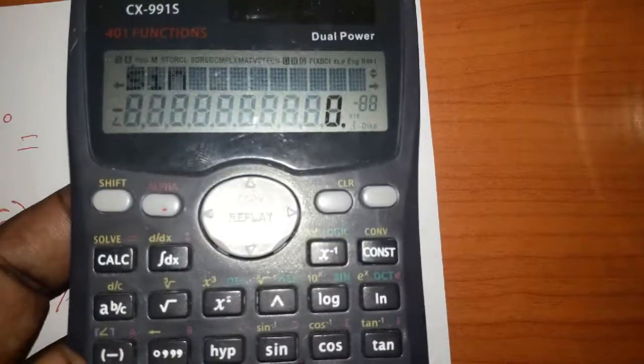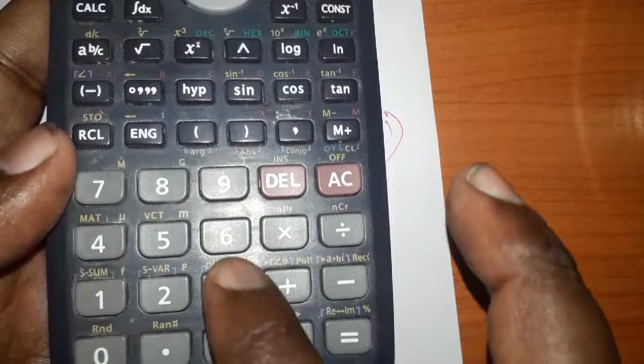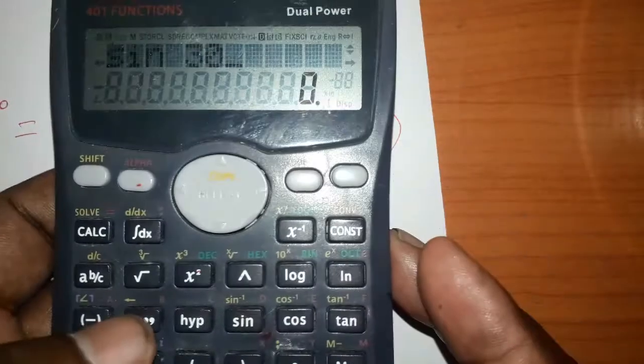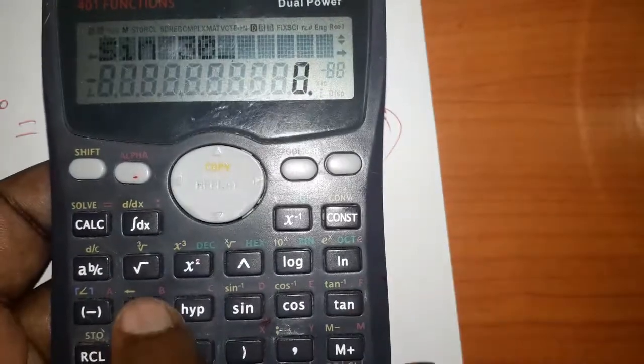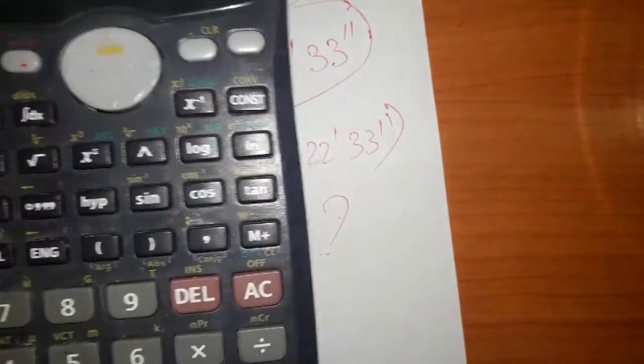discuss now. See here, sin. So I have 30 degrees. To enter degrees, you can press this button one time and you will get 30 degrees. Again, it is